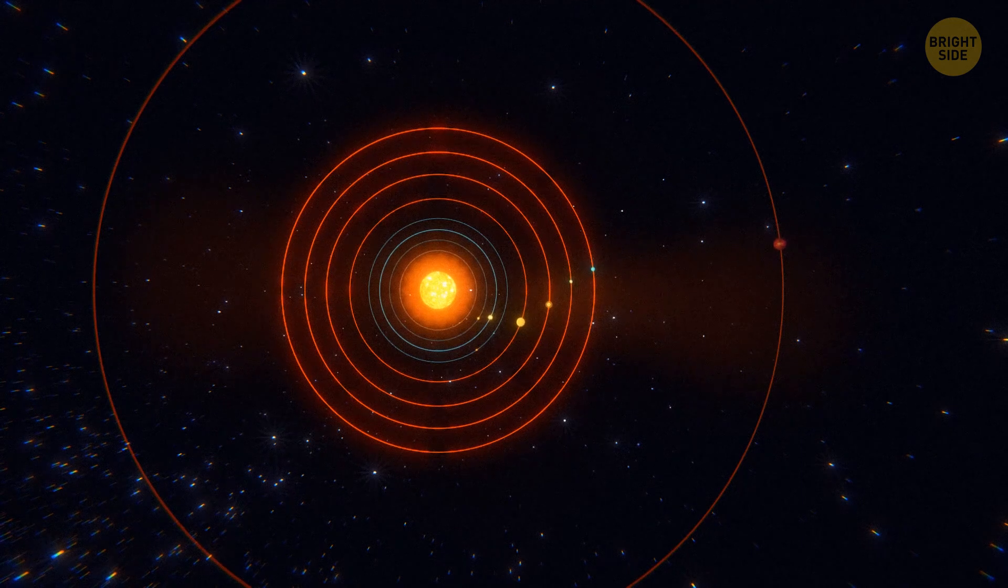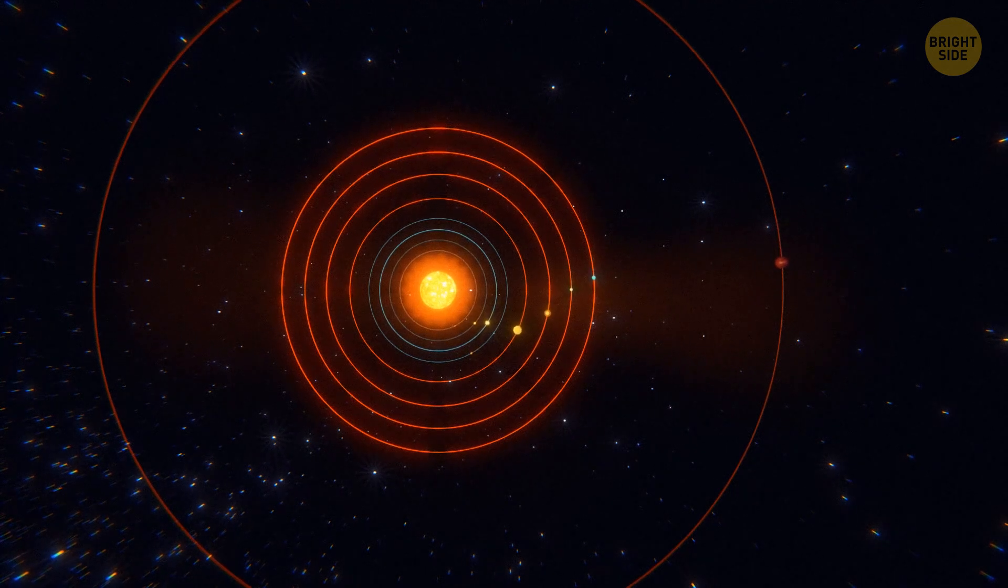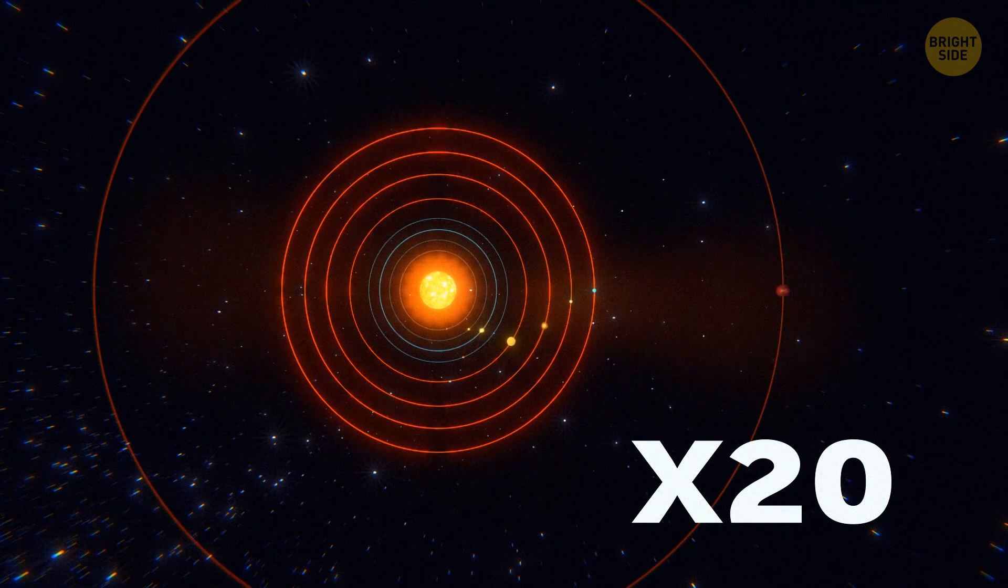It's likely to circle around the Sun, but in the outer reaches of the solar system, about 20 times farther than Neptune.